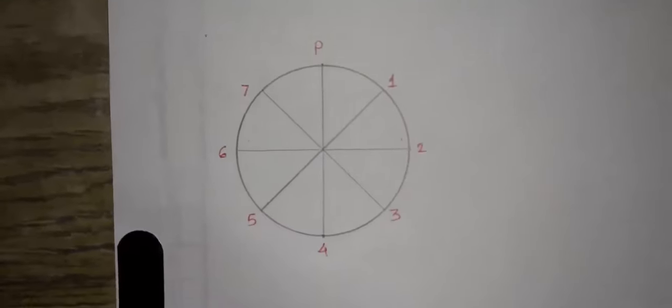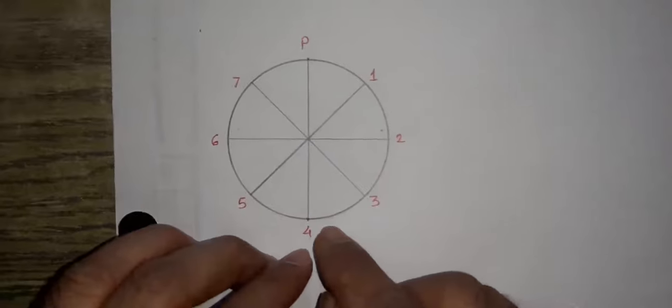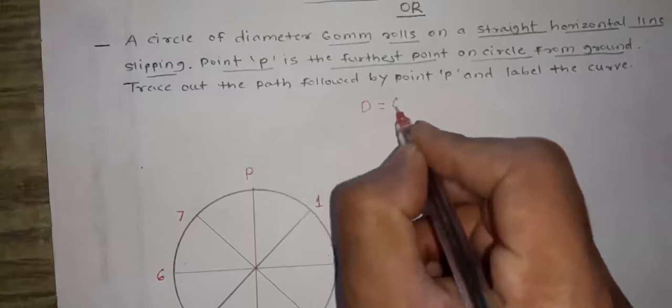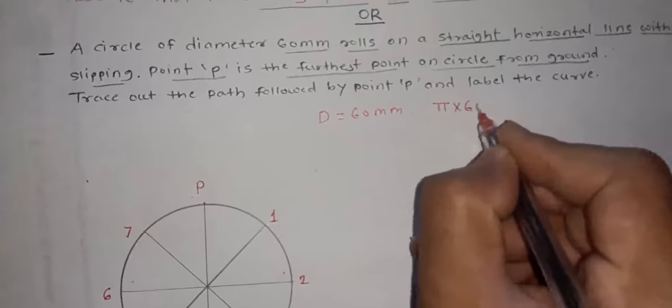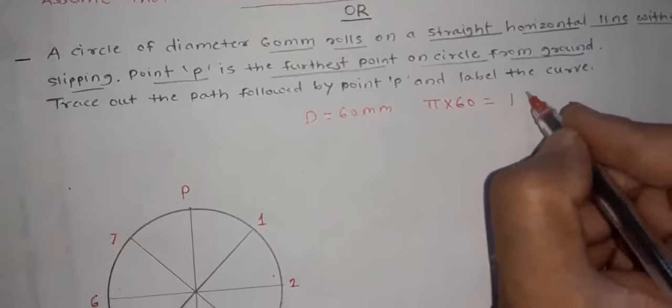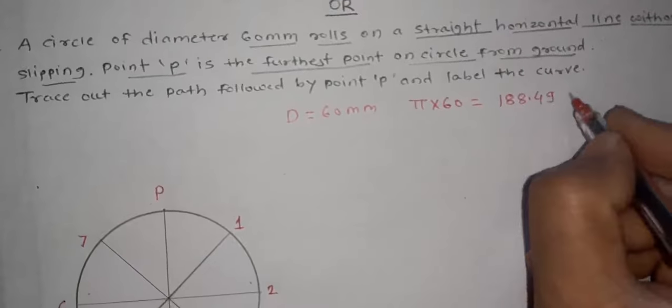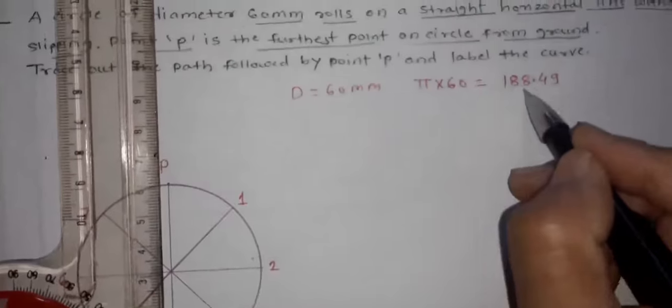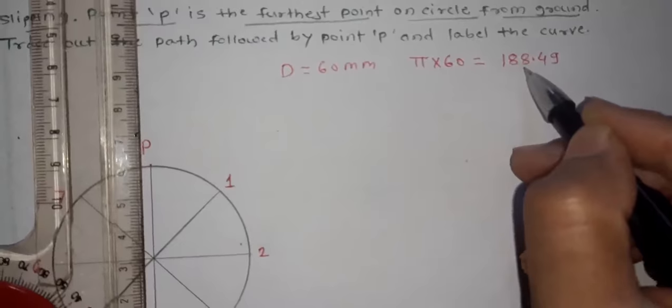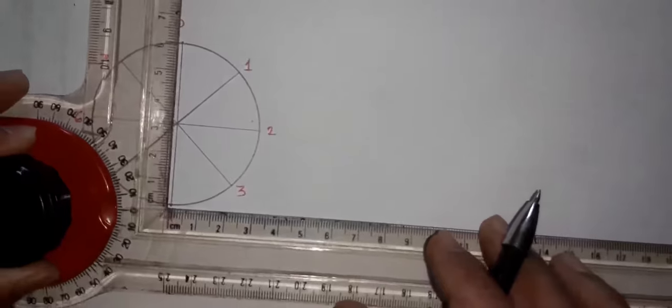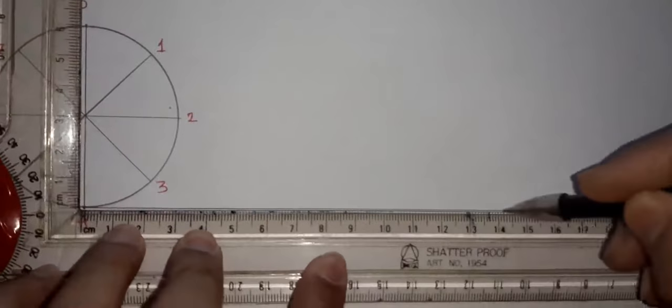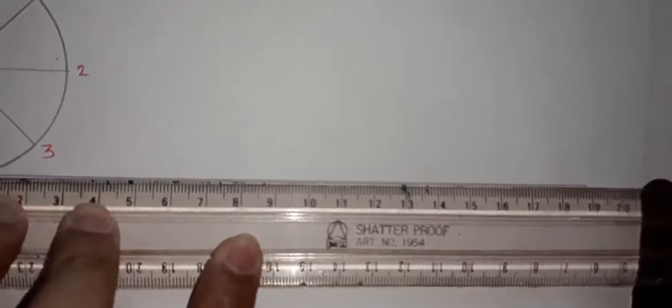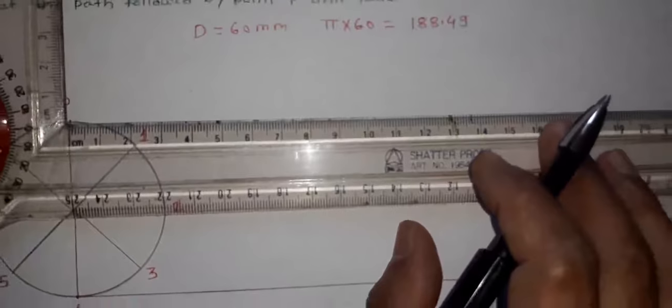Now calculate Pi D distance and mark this Pi D distance from this point on this side. So here we have to draw a circle of diameter 60mm. Therefore your Pi D distance will be 188.49mm. So this will be the 188.5, mark this distance from this point: 180, 85, 86, 87, 88 and remaining 0.5. Mark same distance on the top side of this circle also.